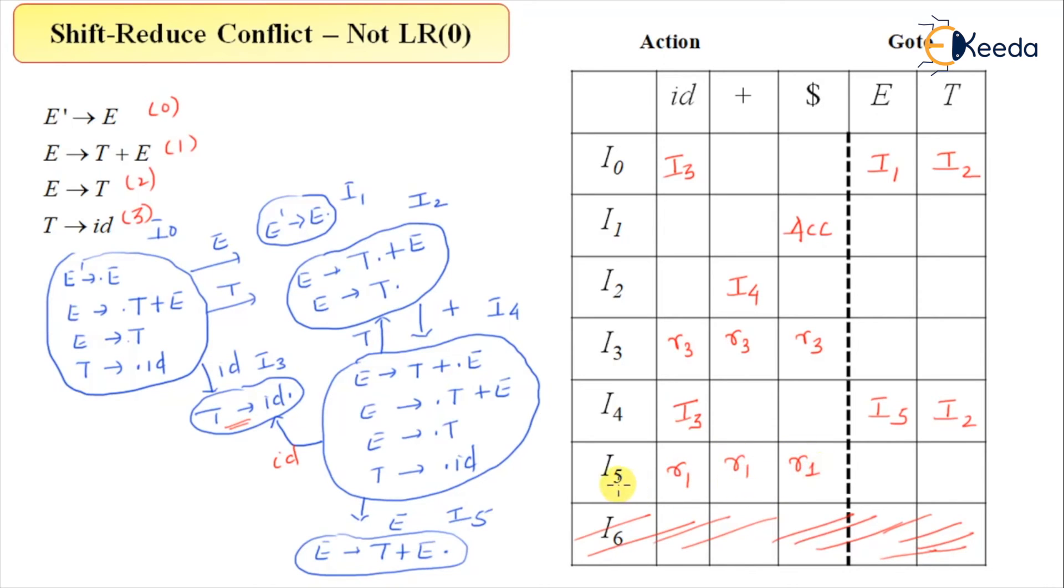Are we missing something here? So we are missing this E derives E dot, which is a part of what? Which is part of I2. So this E derives E dot is what? It's a reduction entry.